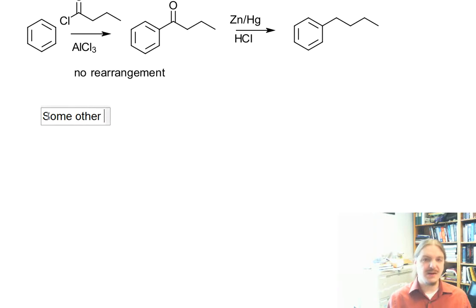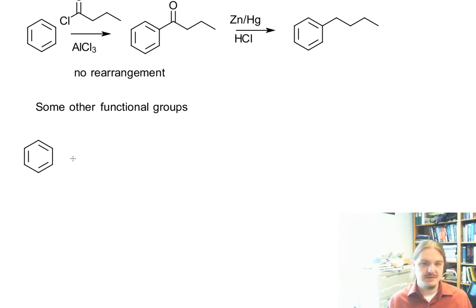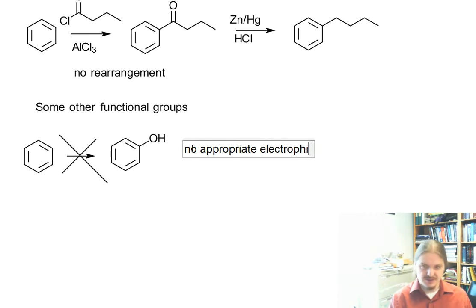So we've talked about a variety of functional groups that can be added by these reactions, but then I just want to share with you some other functional groups. Let's start with phenol. Phenol cannot be done by electrophilic aromatic substitution. This is not to say that you can't synthesize phenol from benzene, but there's no appropriate well-behaved electrophilic oxygen source here.